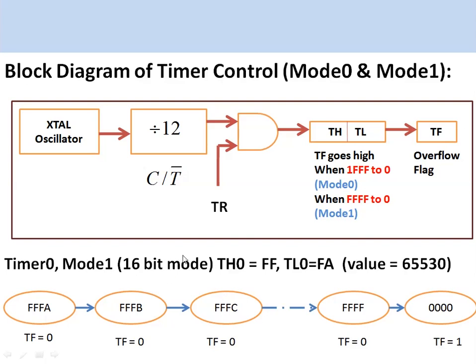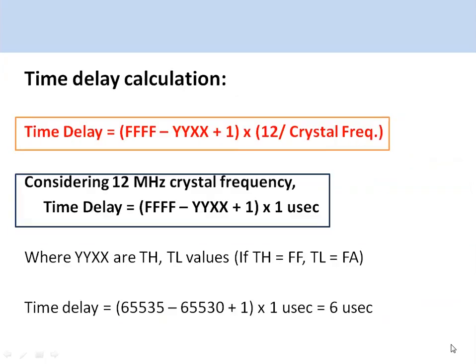An example using timer 0 in mode 1 (16-bit mode): TH and TL are loaded with initial values. Timer 0 is started using the TR bit. The TF0 bit remains 0 until the timer overflows, and when the timer overflows from 0xFFFF to 0x0000, the timer overflow flag is set.